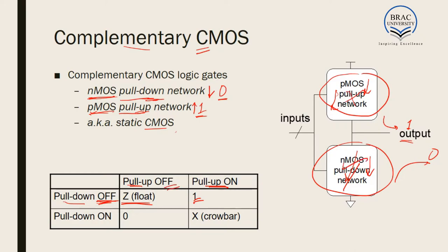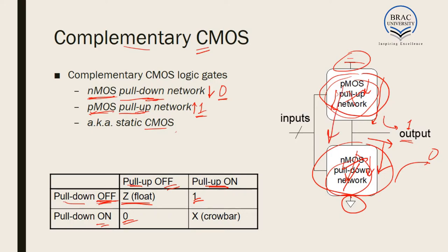Similarly, when pull-up is off and pull-down is on, the pull-down network brings the output down to zero. If both the pull-up network and pull-down network are on, current flows through the pull-up network and through the pull-down network, and no current actually flows through the output. This condition is very harmful because VCC and ground are almost short-circuited, causing very high current to flow and the transistors may burn out. This condition is called the crossbar condition.